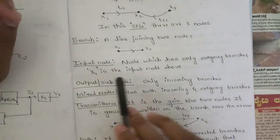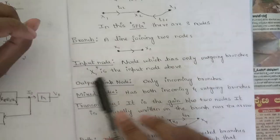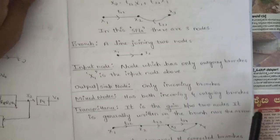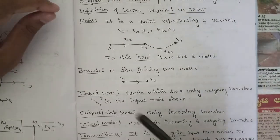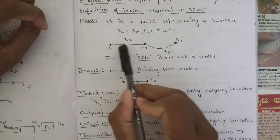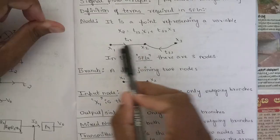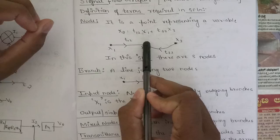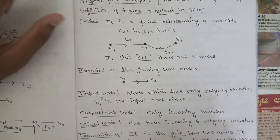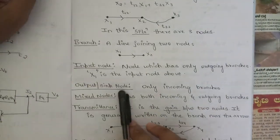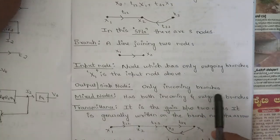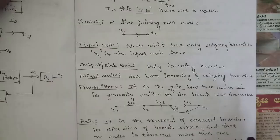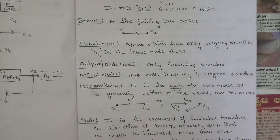The next term is input node — a node which has only outgoing branches. x1 is the input node, where all branches are outgoing. The output node, or sink node, has only incoming branches — x3 is the output node. The next concept is mixed node, which has both incoming and outgoing branches.